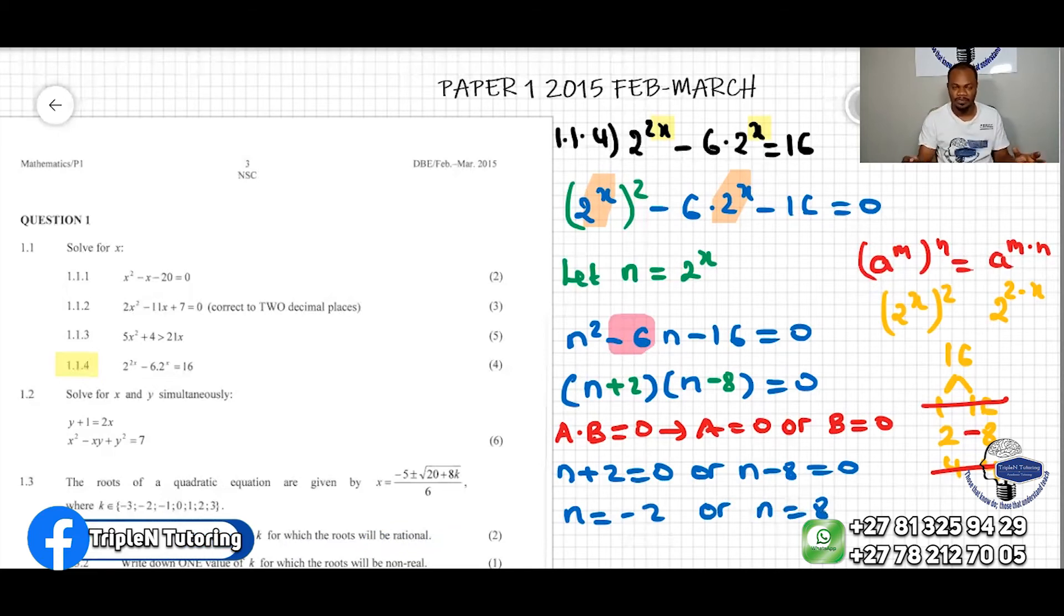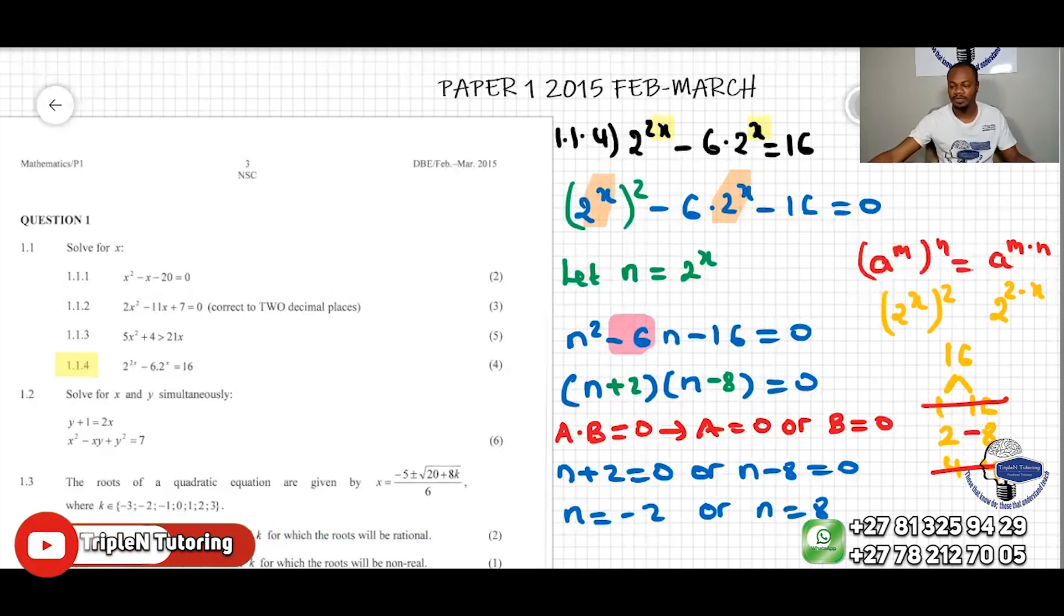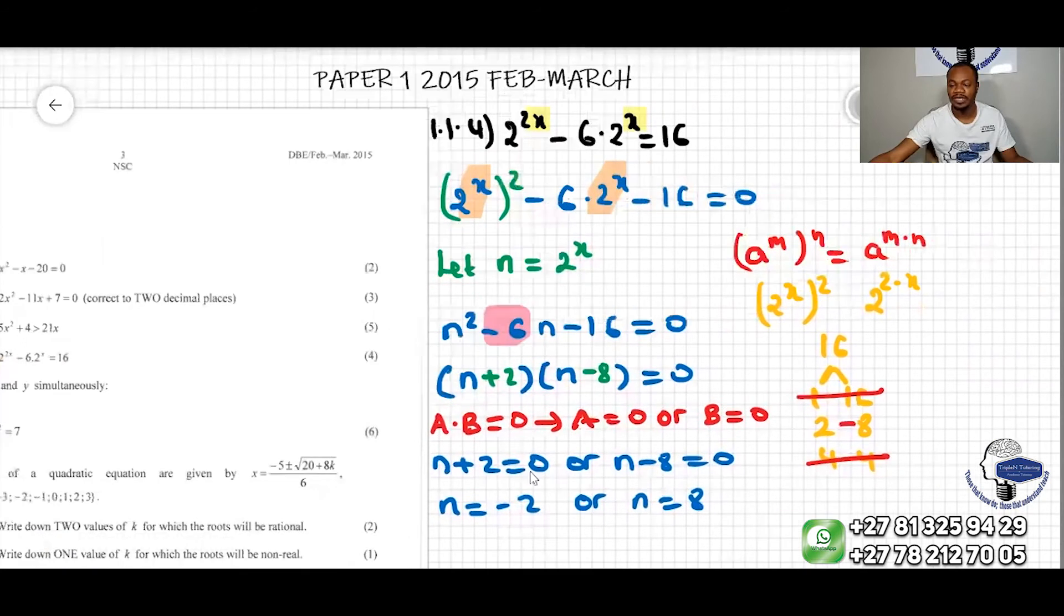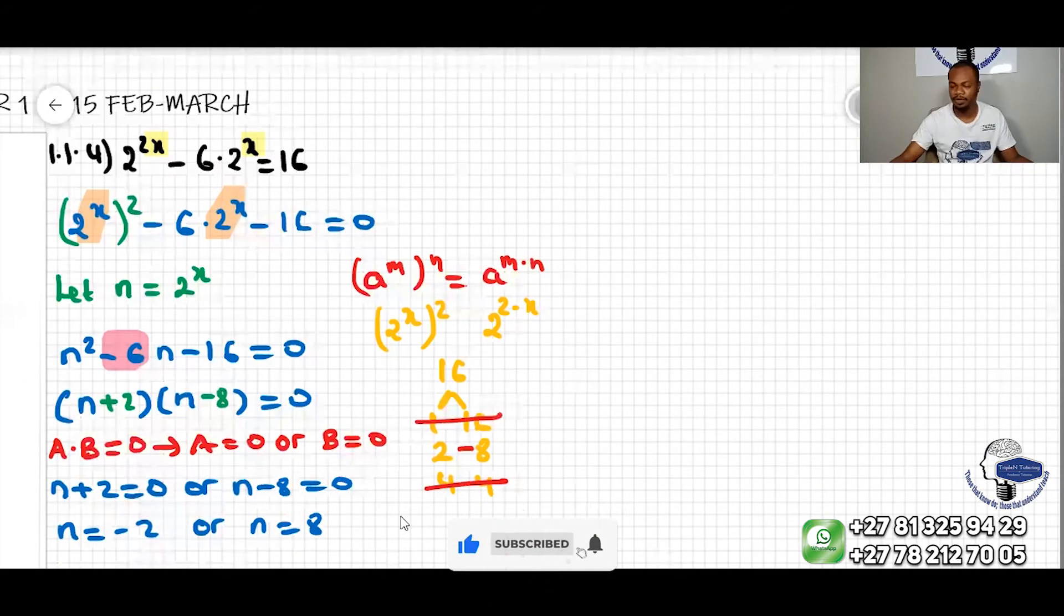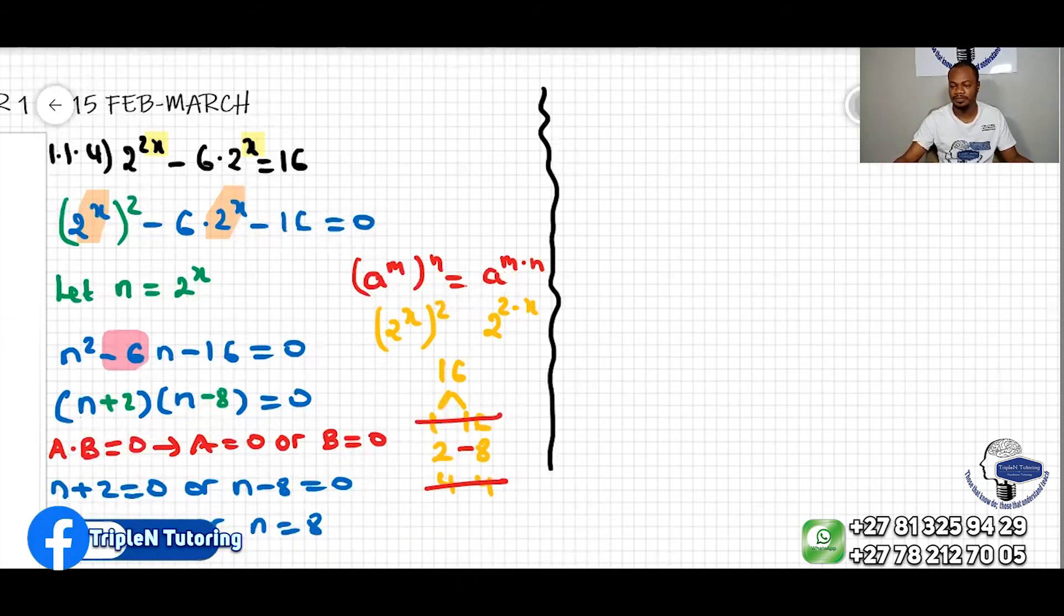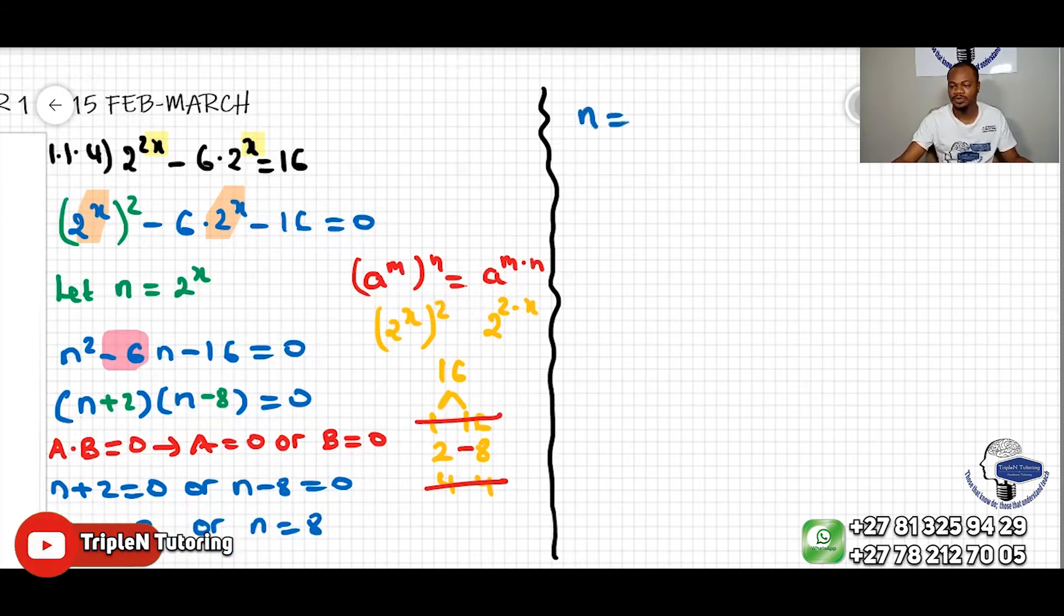Now, we cannot stop here because the question was solve for x. Here we have the solution for n. Now, what can we do? We can now substitute the values of n. We said, remember here, we said that n was equal to 2 to the x.